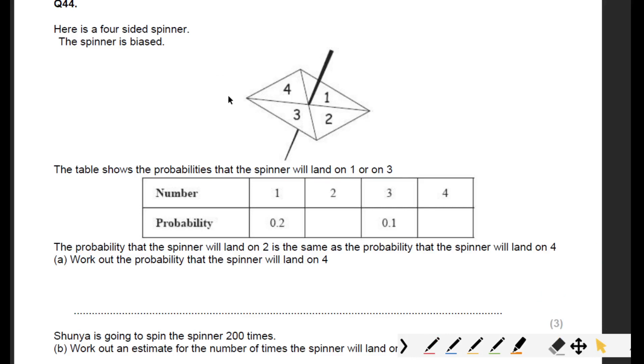Here is a four-sided spinner. The spinner is biased. The table shows the probabilities that the spinner will land on one or on three. The two and the four are missing. The probability that the spinner will land on two is the same as the probability that it will land on four, so this number and this number will be the same. Work out the probability that the spinner will land on four.